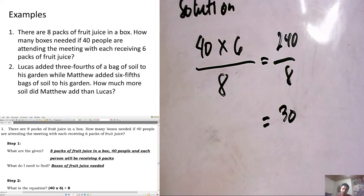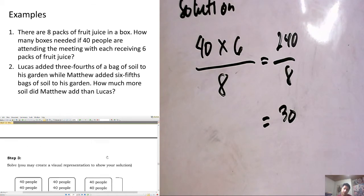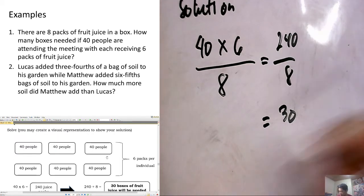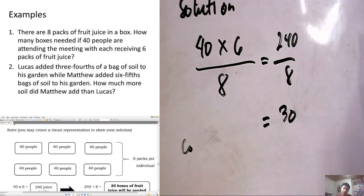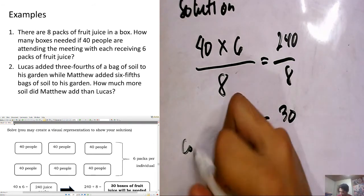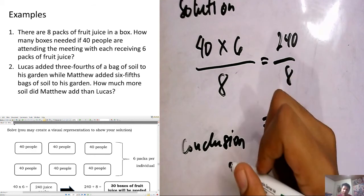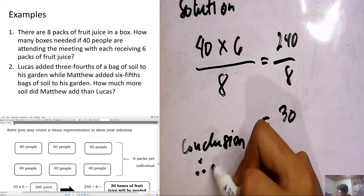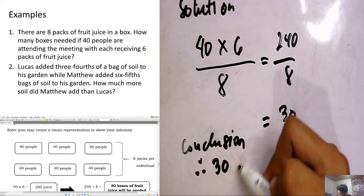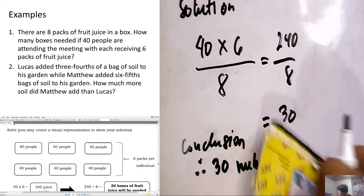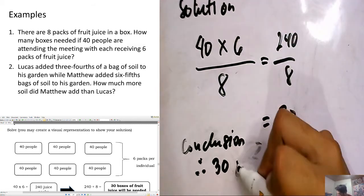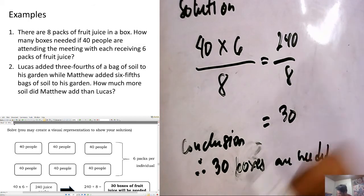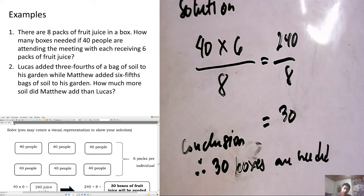Let's double-check with our module — the answer is 30. So that is how to answer that one. After the solution, we go to the conclusion. What we needed to find was the number of boxes, so: therefore, 30 boxes are needed. That is now our answer.